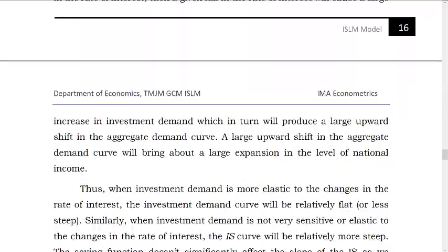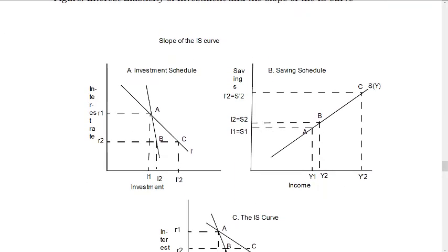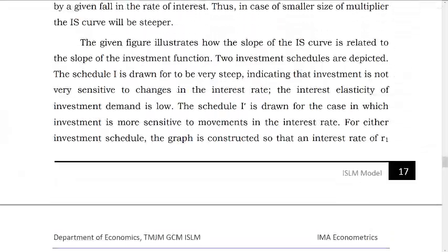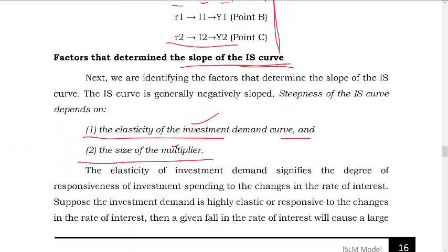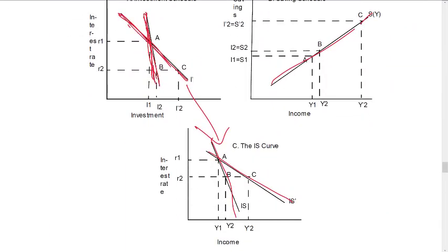The slope of the IS curve depends on the elasticity of investment demand and the size of the multiplier. We need to identify the elasticity of investment demand and the multiplier. This is more elastic. This is less elastic. What is the elasticity?